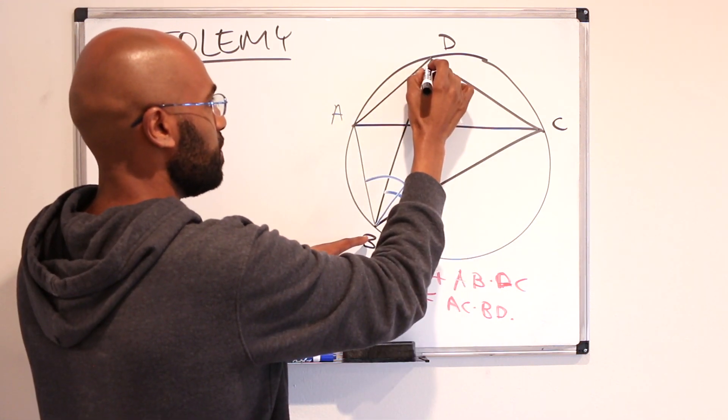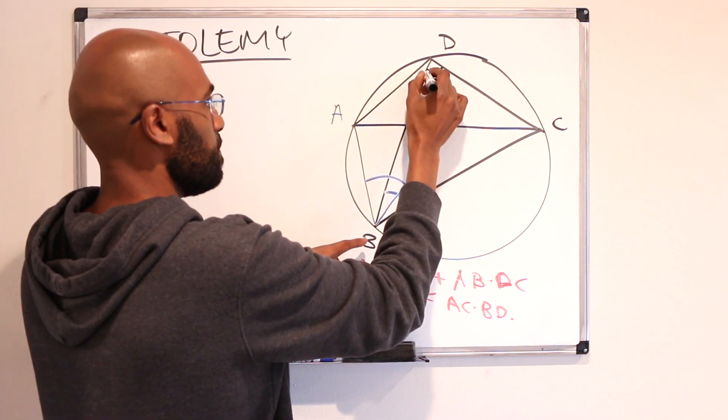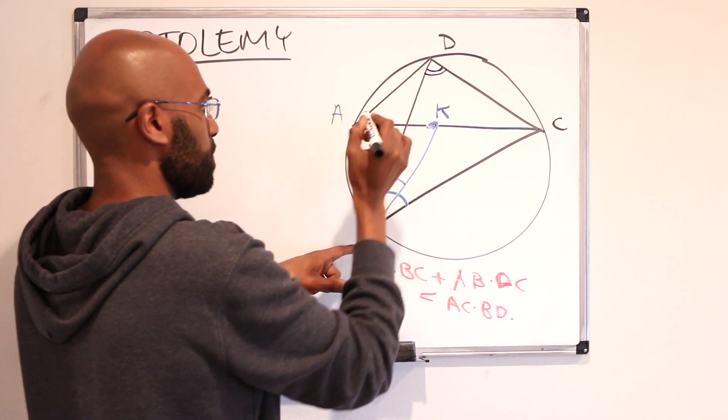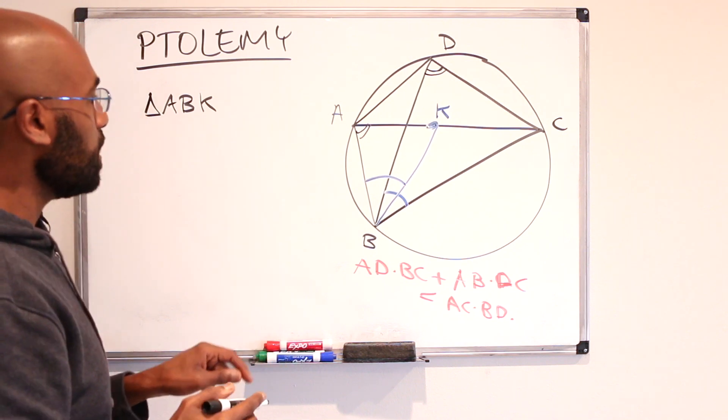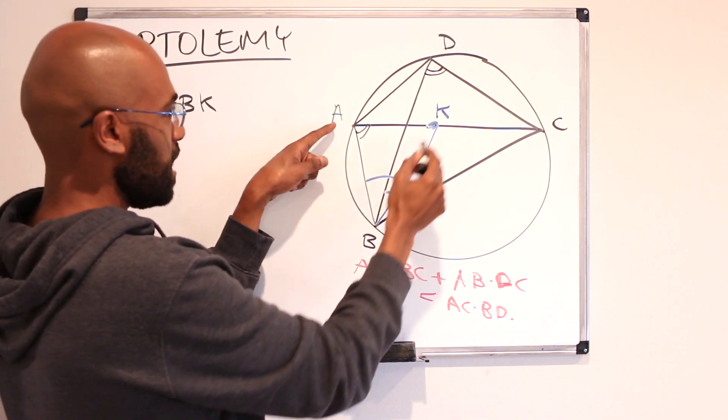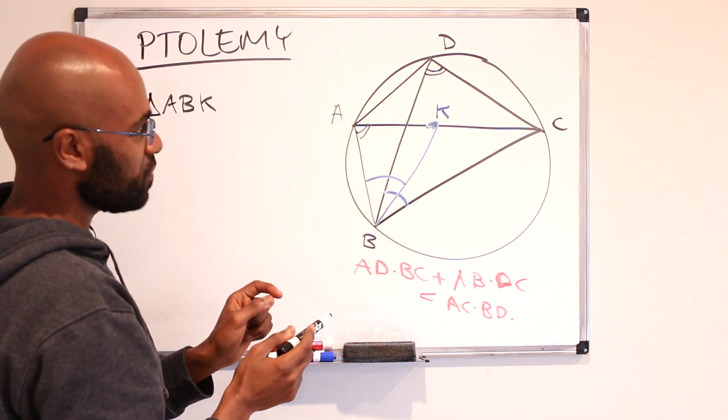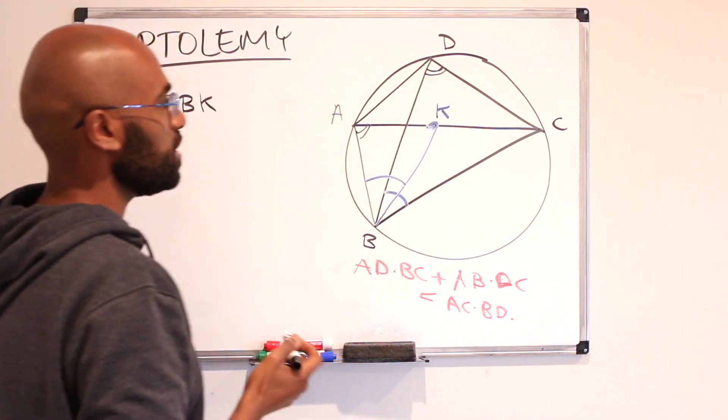So that means that this angle here has to be the same as this angle right over here. So we see in triangle ABK we have two angles that are the same as triangle DBC and so these two triangles actually have to be similar.